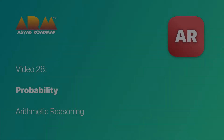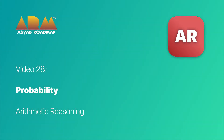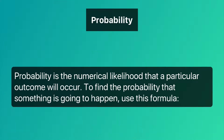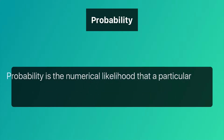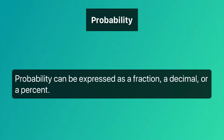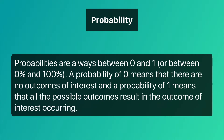Welcome back to the roadmap. Today's video is about probability. Probability is the numerical likelihood that a particular outcome will occur. To find the probability that something is going to happen, use this formula: probability equals number of outcomes of interest over number of possible outcomes. Probability can be expressed as a fraction, a decimal, or a percent.